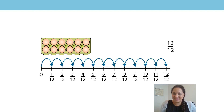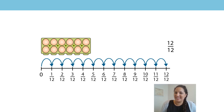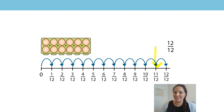Well done for counting along at home. Now let's count up in non-unit fractions. Remember to start from zero. Are you ready? Let's go. Zero, one-twelfth, two-twelfths, three-twelfths, four-twelfths, five-twelfths, six-twelfths, seven-twelfths, eight-twelfths, nine-twelfths, ten-twelfths, eleven-twelfths, twelve-twelfths. Well done! Can you point to the number eleven-twelfths on the number line? Where would it go? Where is eleven-twelfths? Well done if you're pointing to here. Eleven-twelfths.